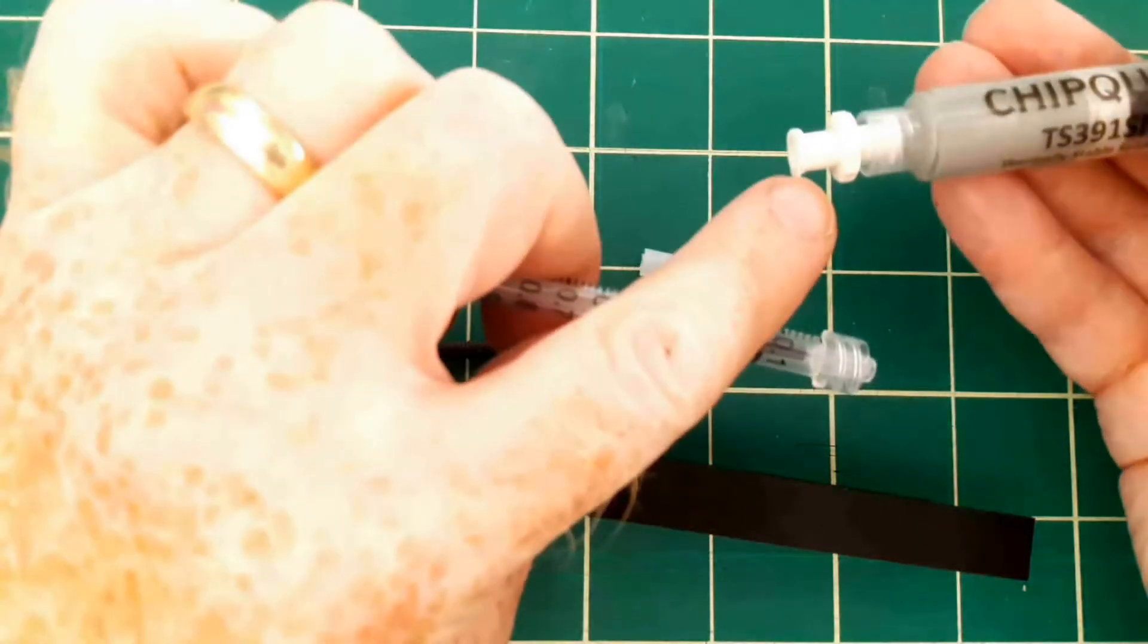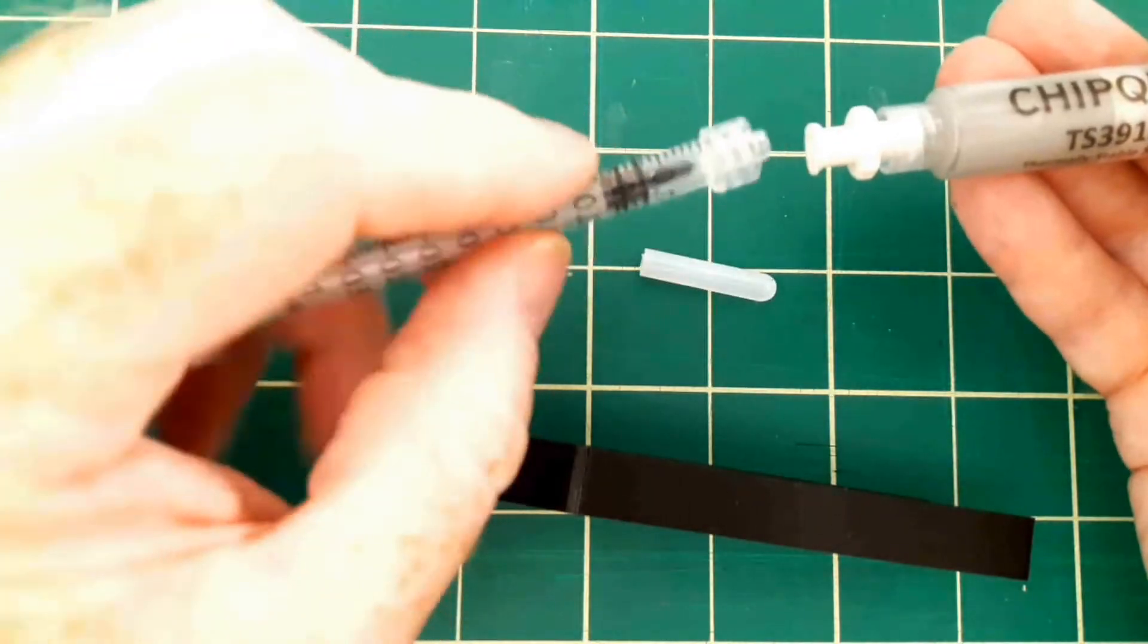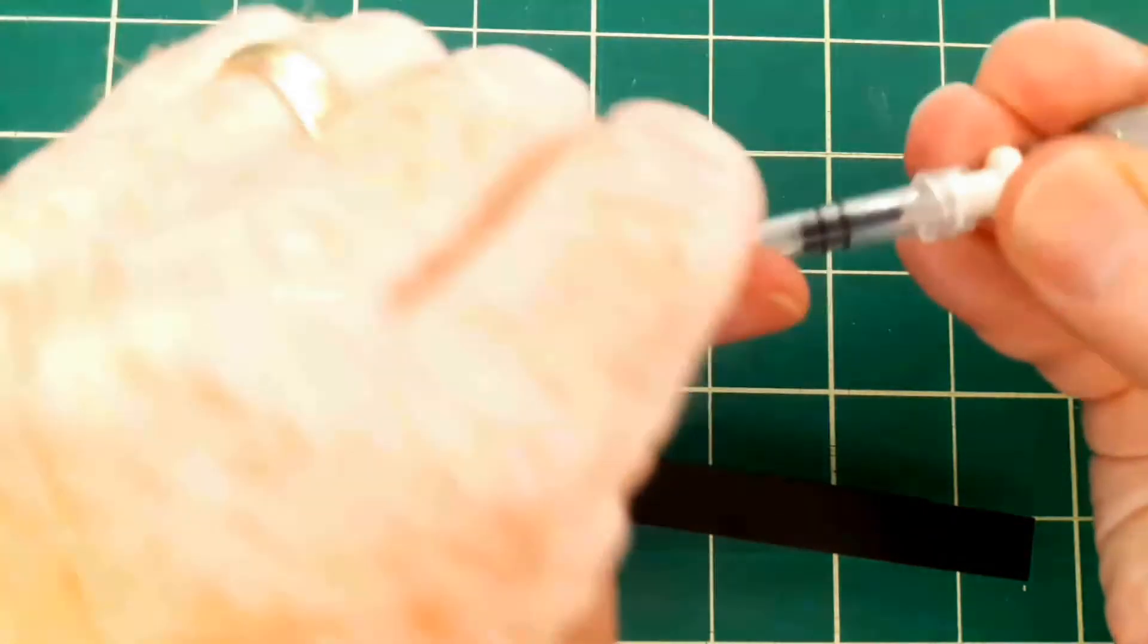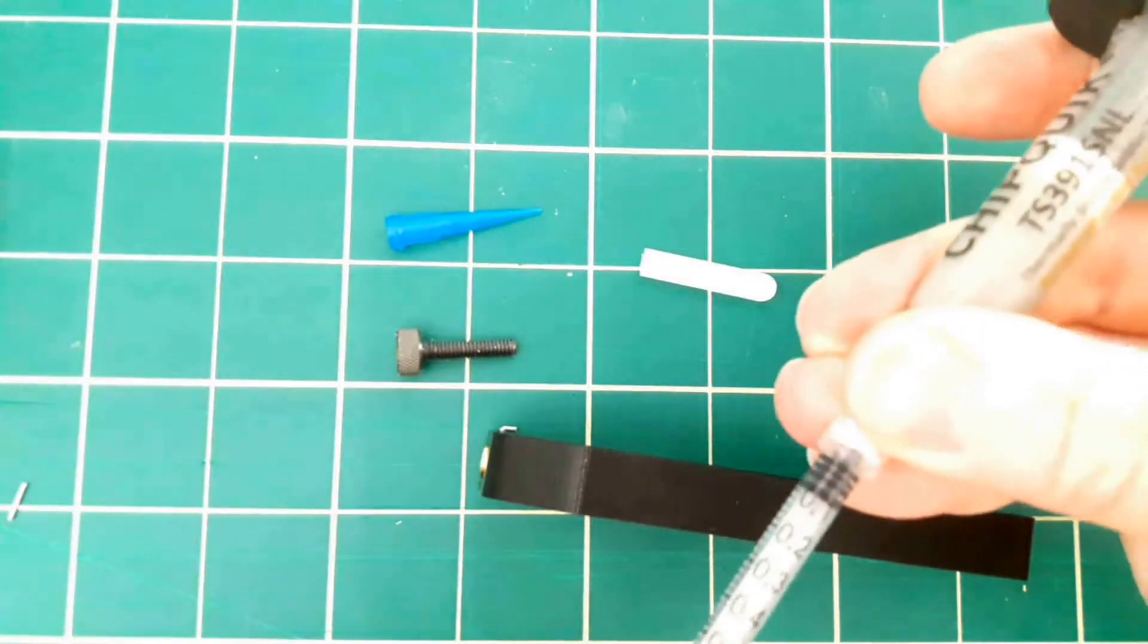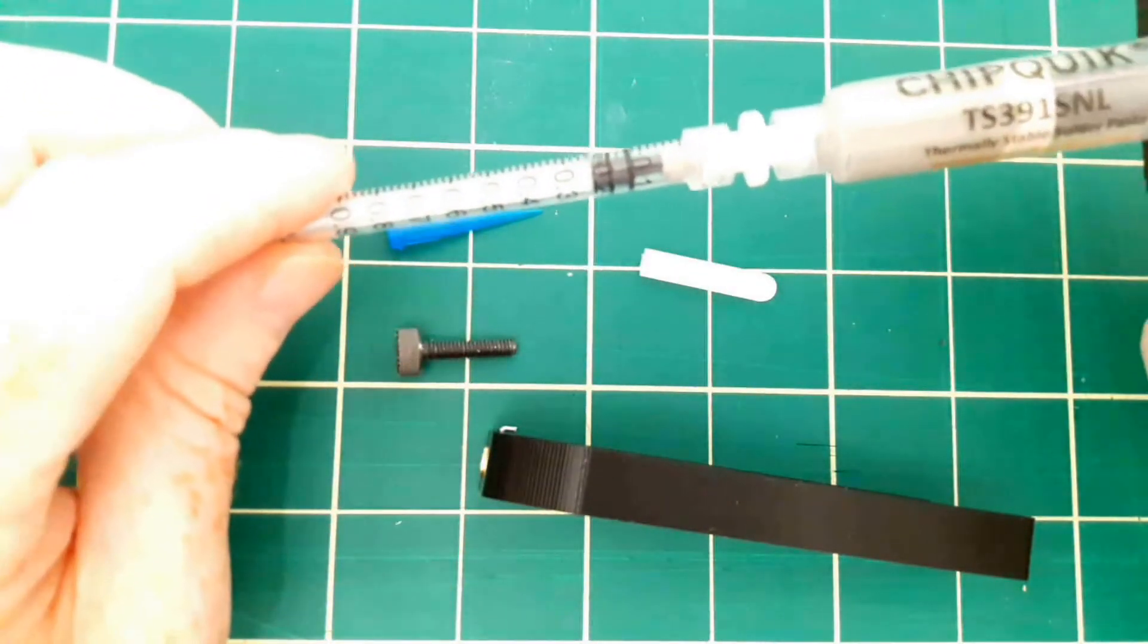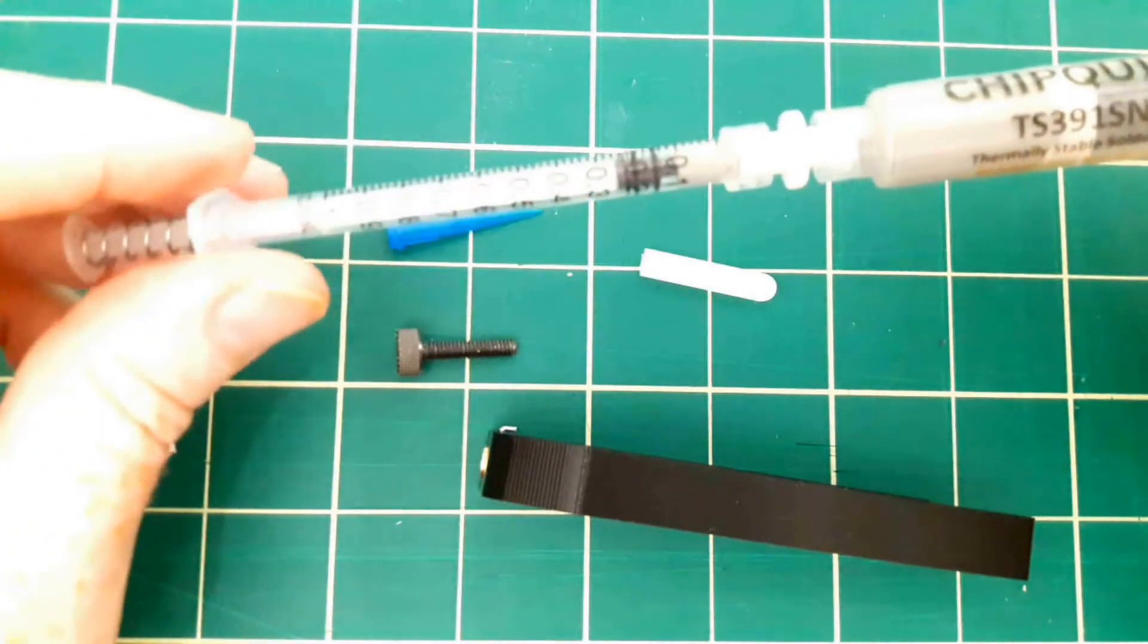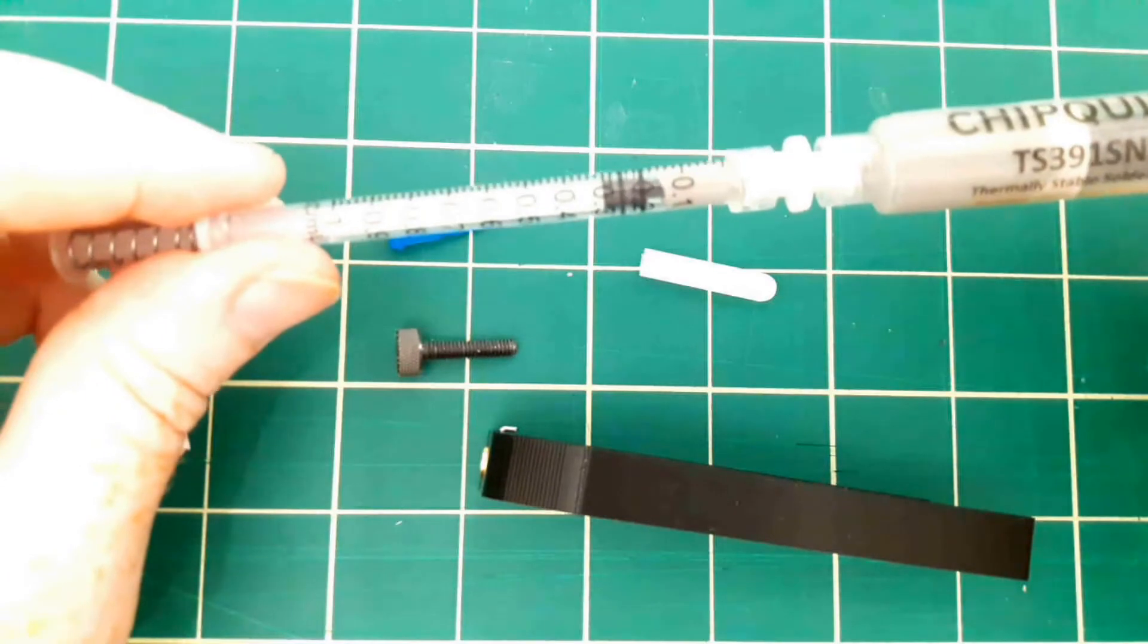And I've got a female female luer syringe coupler in here and what I'm going to do is couple the two syringes together. Actually I'll push this in and then couple the two syringes together and then I will adjust this so that I'm getting some solder paste flowing from the big syringe into the little syringe.